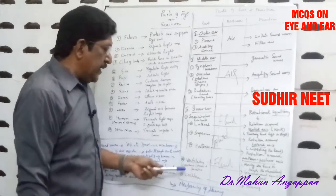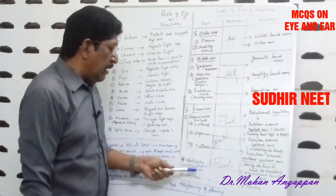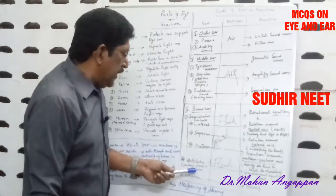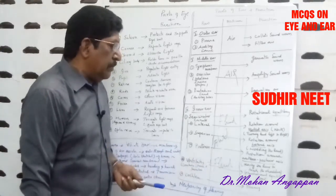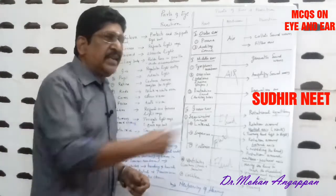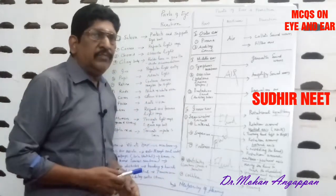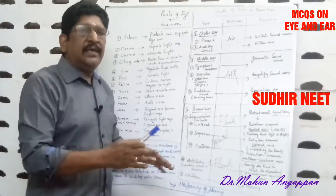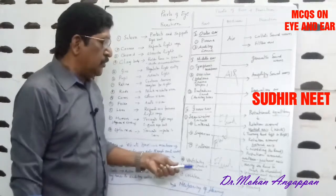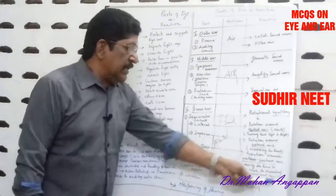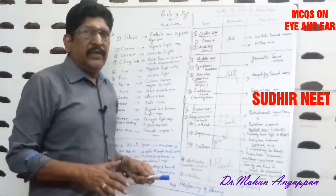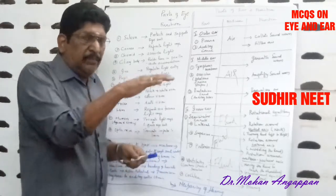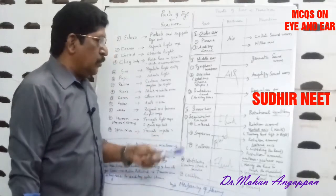Number two, vestibules. They contain the sensory parts — utricle and saccule. They are also for equilibrium, but specifically for gravitational equilibrium. When we are standing, running, or walking, the vestibules maintain that equilibrium. So the vestibules are responsible for gravitational equilibrium.